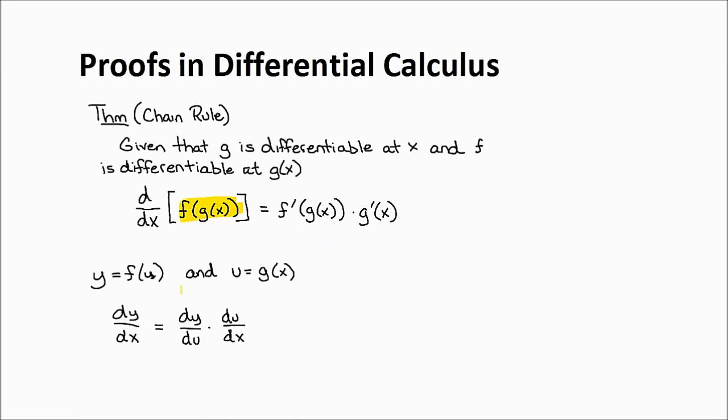For those who are into Leibniz notation, it basically says that if we have some function of u and we call that y, and u is also a function — it's kind of like an onion where you have layers: an outer layer called f and an inner layer called g. You keep peeling those layers back until you get to x. Then dy/dx is the same as taking the derivative of y with respect to u first, and then taking the derivative of u with respect to x. A lot of students like this notation because they think the du's cancel and you just get dy over dx. The du's actually do not cancel; they're not fractions. But it does lend itself to better memorization of this formula.